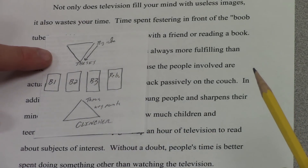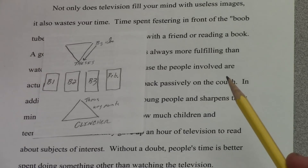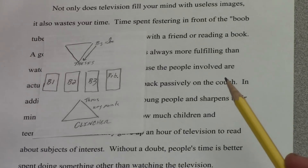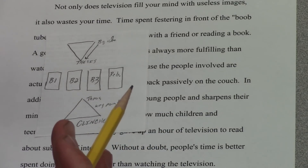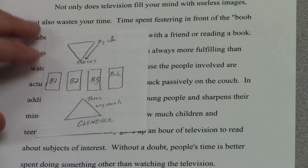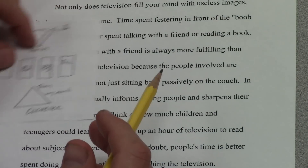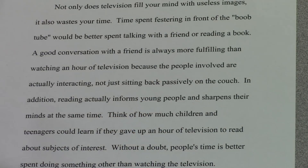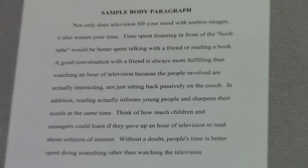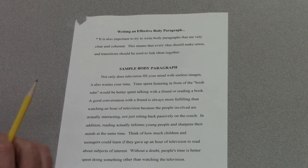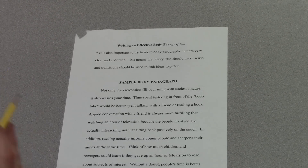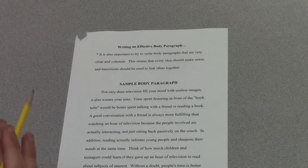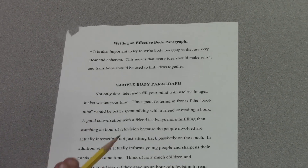When we did body one, we focused on structure: a clear topic sentence, vivid specific examples, and a concluding sentence at the end. So we really hammered structure on that first one. With body two, I just want to remind you to use transitions. Using transitional words or phrases is something they specifically look for on the ACT rubric, and you'll want to make sure that you're smoothly transitioning between ideas as you write your essay.